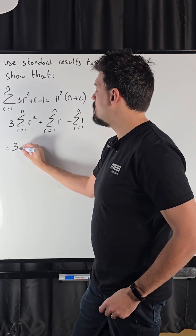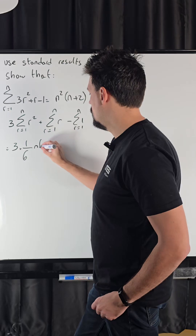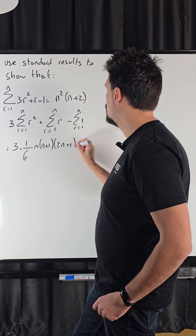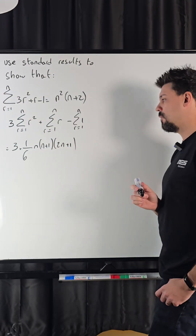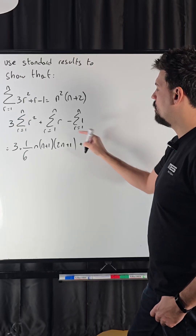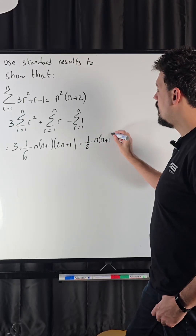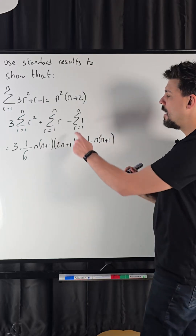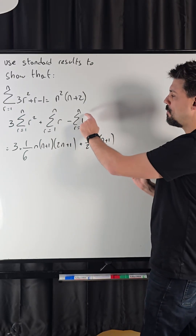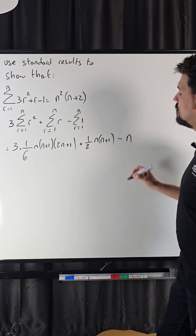So what does that give me? Well, the sum of r squared we of course know — no formula books for us. The sum of r from 1 to n is one half n(n+1), and the sum of 1 from 1 to n, well if you go 1 plus 1 plus 1 n times, you just get n.